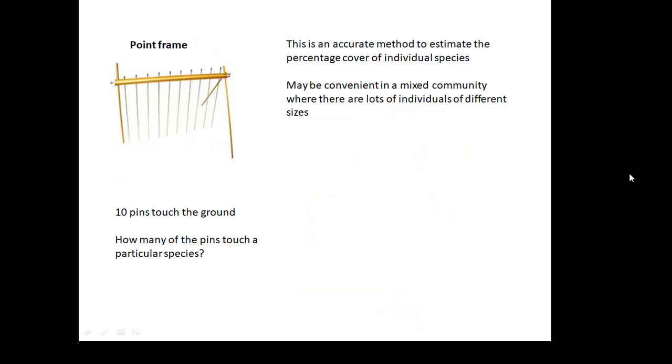A point frame, 10 pegs go down and touch the ground. And basically what you would say is how many of the pins, how many of the pegs actually touch a particular species. And then you would do that at lots of places randomly. And that would give you an idea. You could compare what's happening at different places using a point frame.